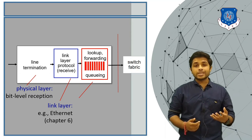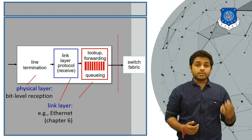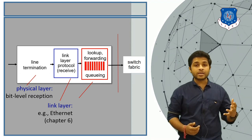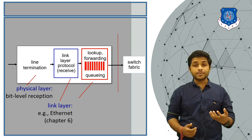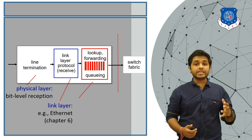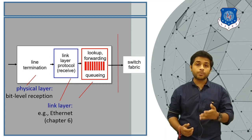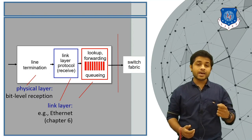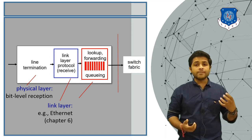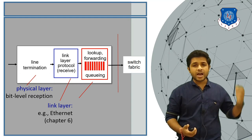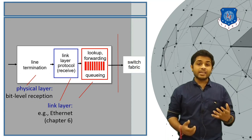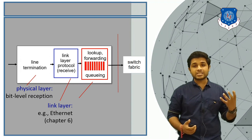The lookup, forwarding, and queuing block handles the high rate of packets arriving at the input side of the router. The router must check each packet as fast as possible so the maximum number of packets can be transferred from input port to output port. If the router does not have a powerful processor and packets are arriving at a very high rate, they will be queued in this block. If the queue exceeds the router's memory capacity, packets must be dropped.